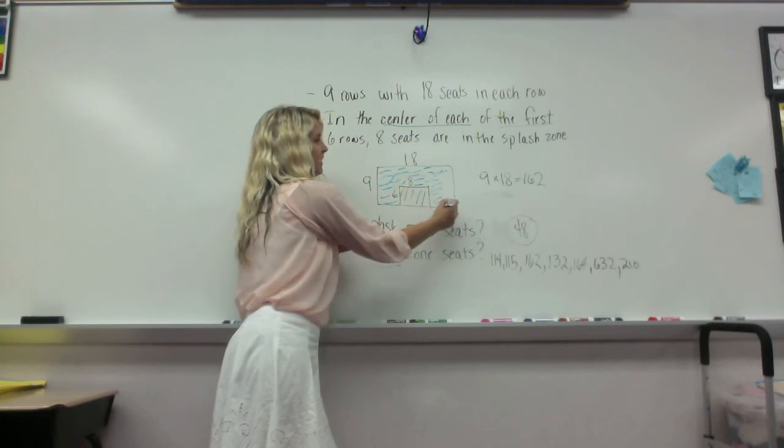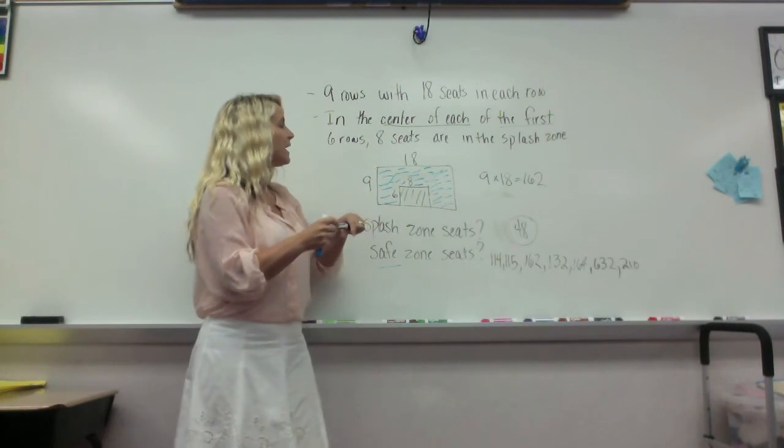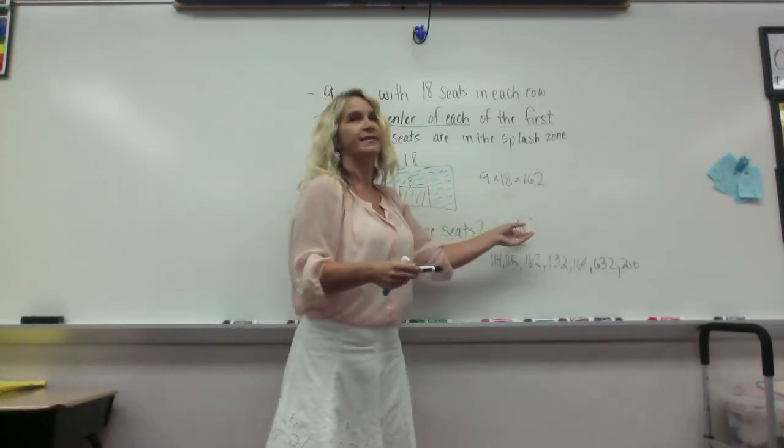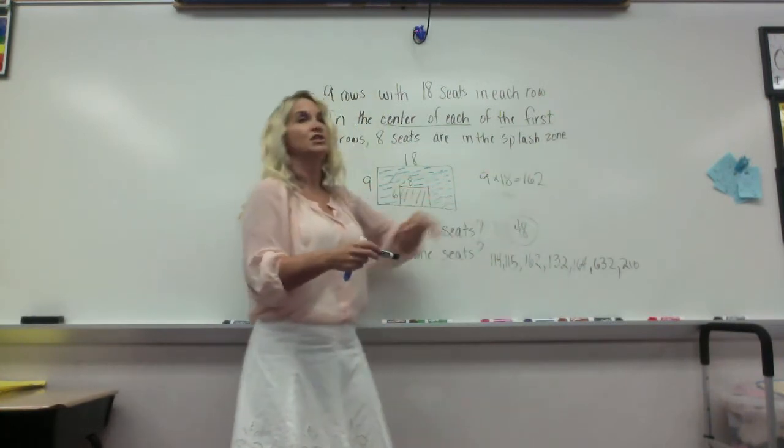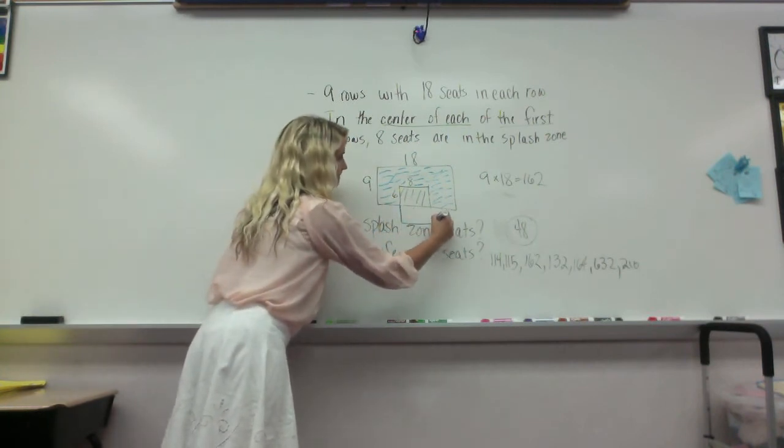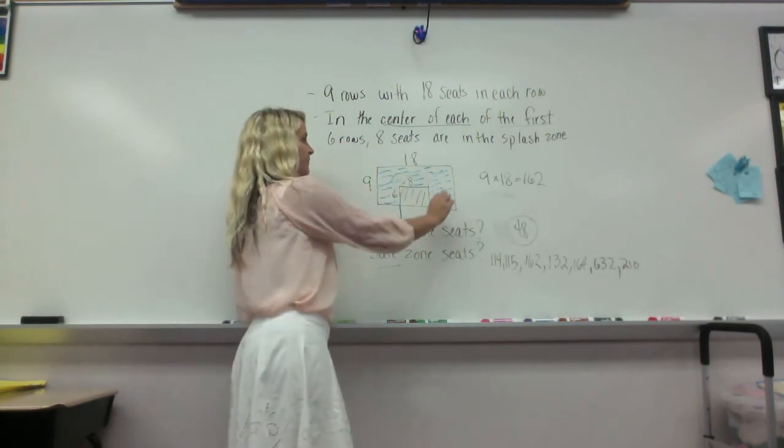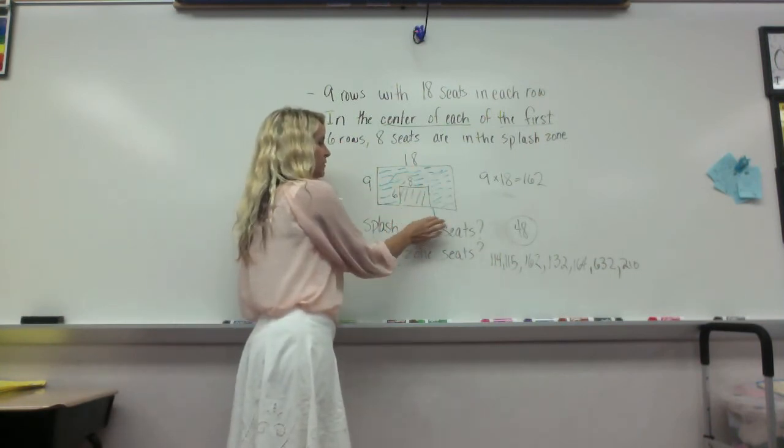Yeah, I should have done the inside blue because that was the splash zone. This is the safe zone. So instead of adding these seats to this, which actually adding those seats would make them go down here by adding them, right, because this is the array of nine times 18. Instead of adding them, what should we be doing?